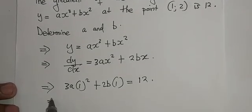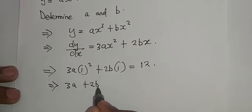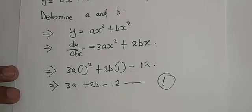Therefore, in this case it means that 3a plus 2b equals 12. This becomes equation number 1.